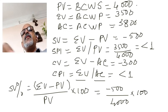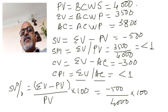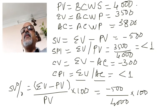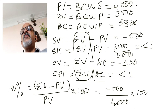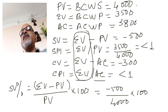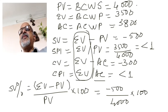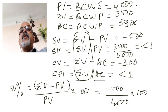A useful shortcut to remember all these formulas is that Earned Value always comes first. Schedule Variance = EV − PV, SPI = EV / PV, Cost Variance = EV − Actual Cost, and CPI = EV / Actual Cost.